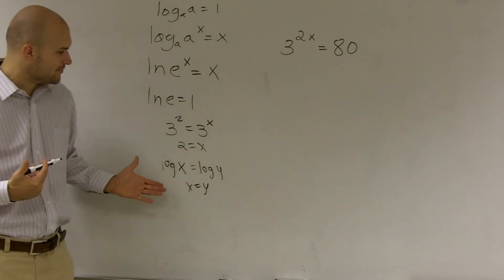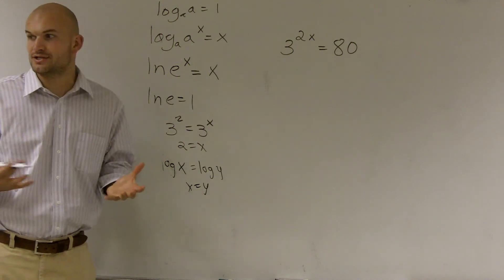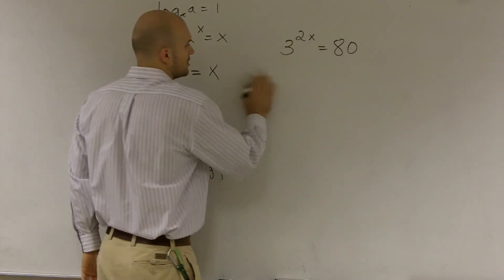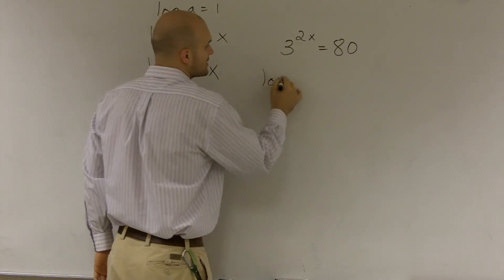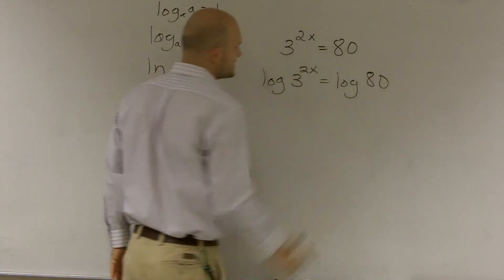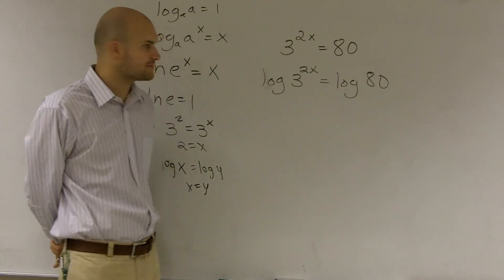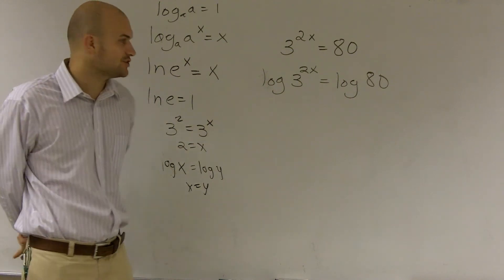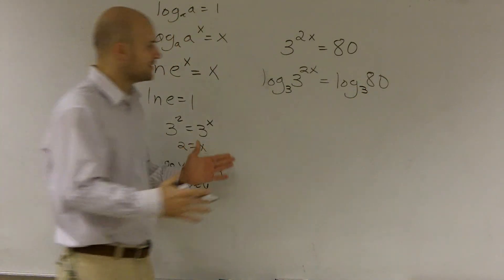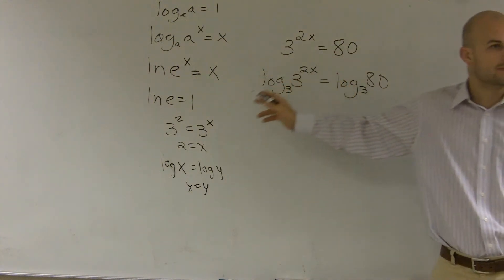What this tells us is we're allowed to take the log of both sides — it's not going to change the problem. So I can take the log of both sides. Why would I want to do that? Well, if I take the log of both sides, right now I have base 10, but I don't want to use base 10. If I choose to use log base 3, what's going to happen is I've just created log base 3 of 3, which is going to cancel out.